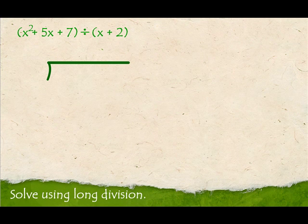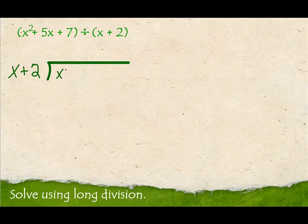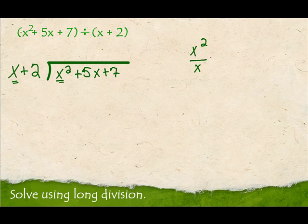Let's solve another example using long division. To set this up, we take the divisor, x plus 2, and put it out front, and take the dividend, x² plus 5x plus 7, and put it inside. We take the first term in each — x² divided by x — and reduce it. x² divided by x is x, and that goes right here.